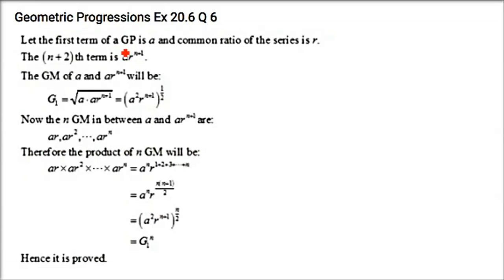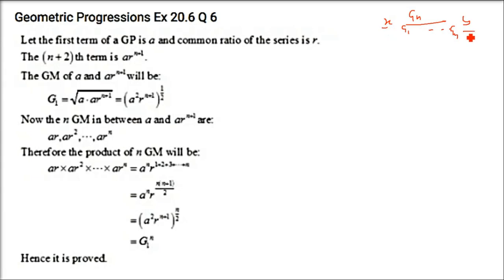We have to prove that the product of n geometric means between two quantities is equal to the nth power of the geometric mean of those two quantities. This is also a theorem in the textbook. If x and y are two numbers with n geometric means G1 to Gn inserted between them, then G1 × G2 × … × Gn = G^n, where G is the single geometric mean of x and y.